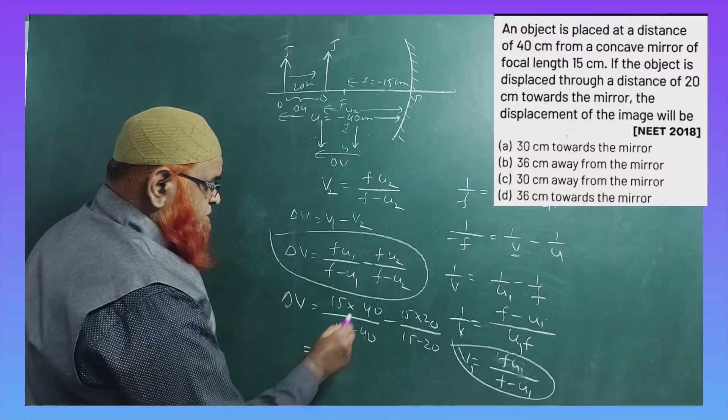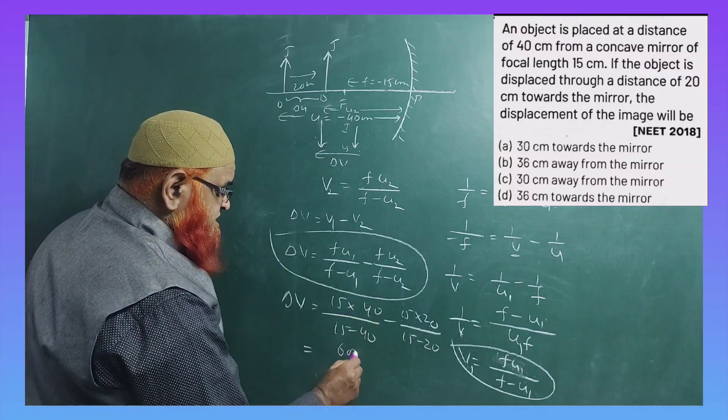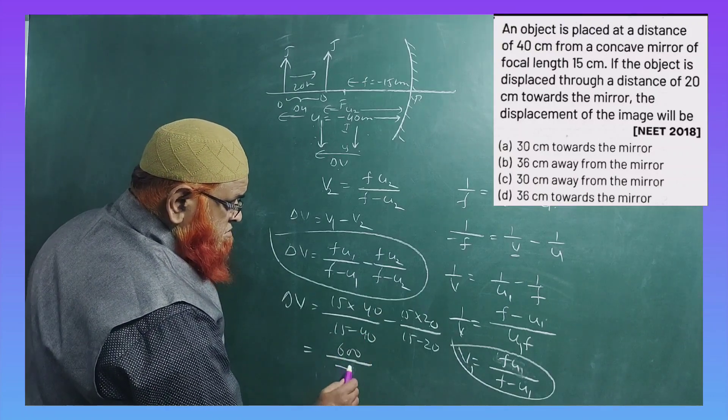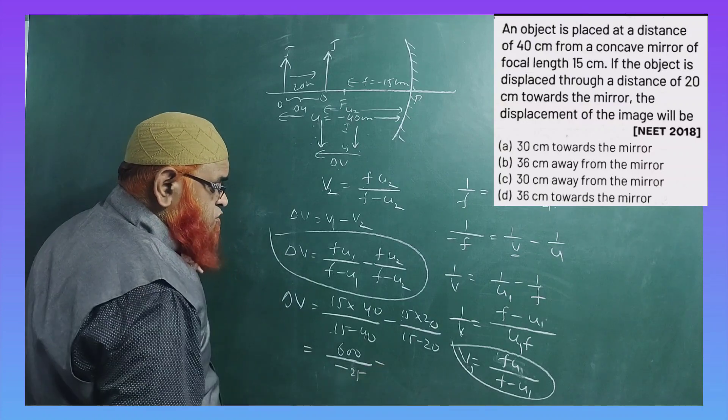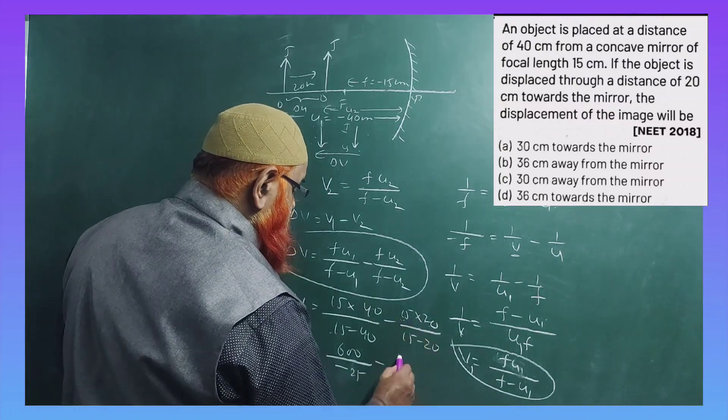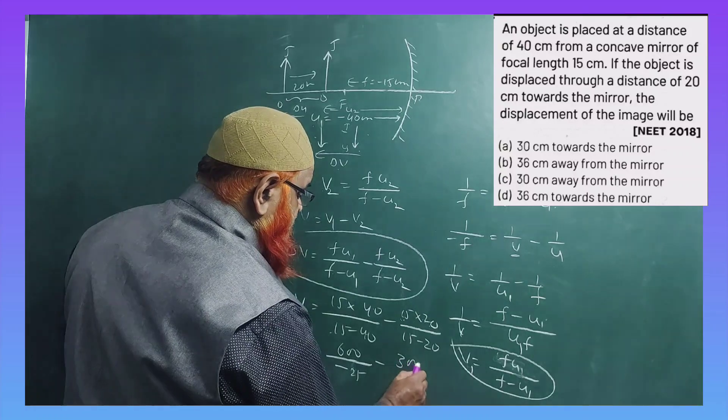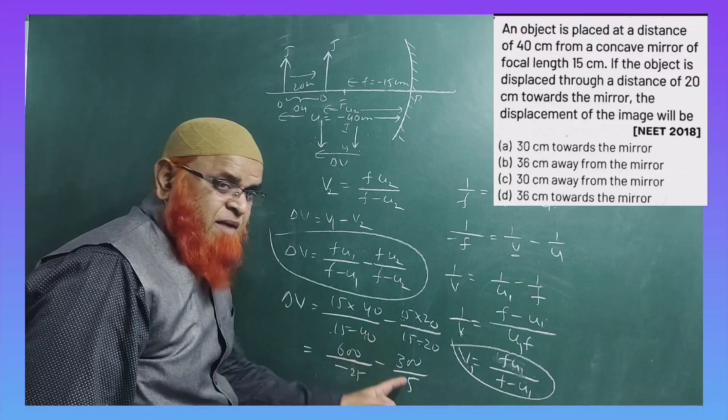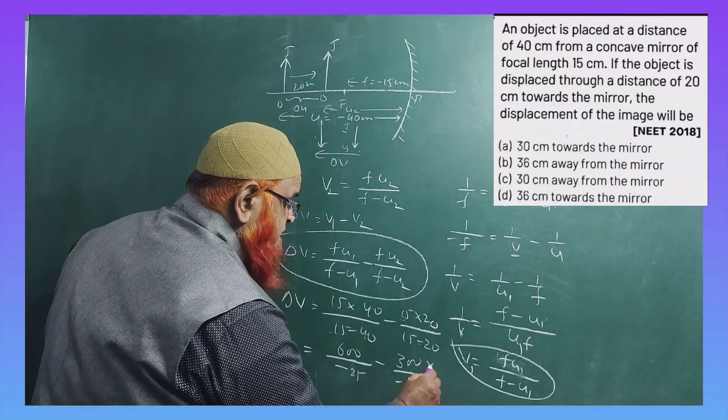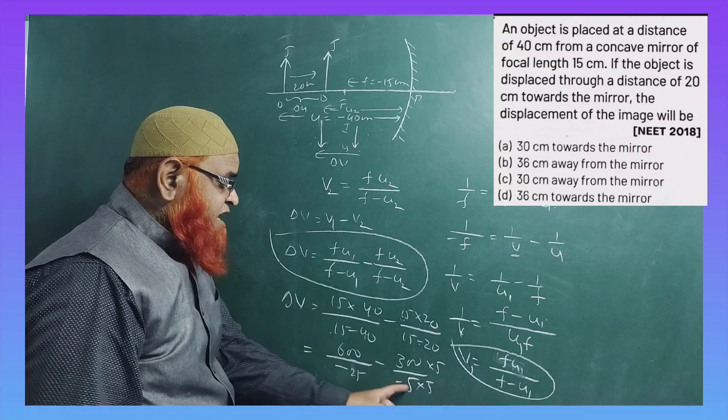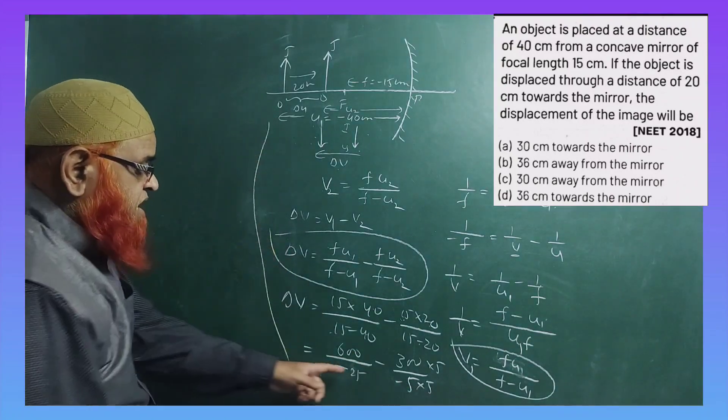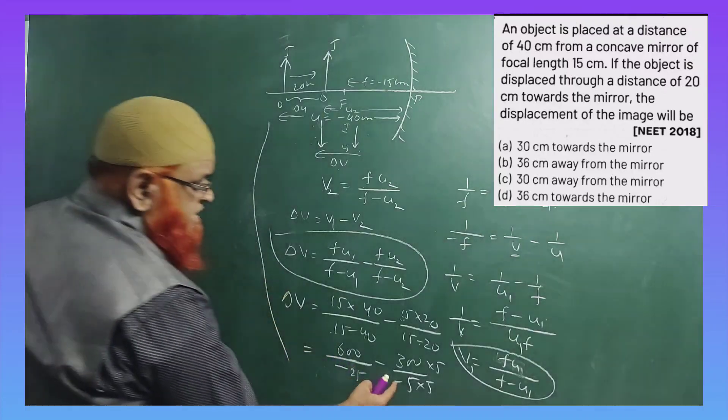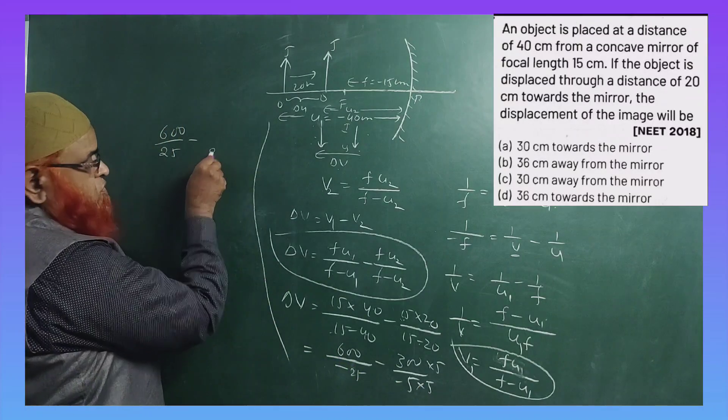So like this, we'll be getting 600 and this is going to be minus 25. Minus of 15 into 20 is 300 divided by minus 5. So you want to make the denominator same here. You just multiply denominator and numerator with 5 so that denominators will be same and calculations will become easier. So we'll write 600 here divided by 25. 5×5 is 25 here.